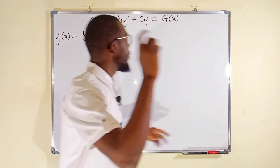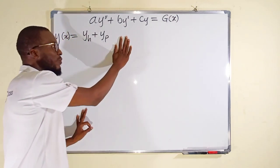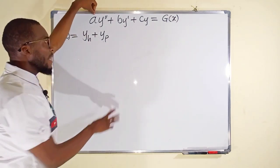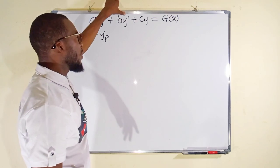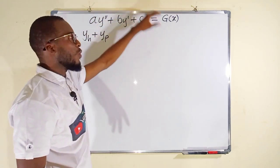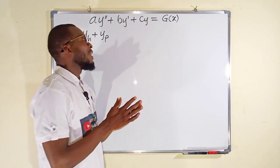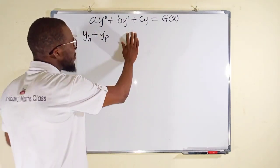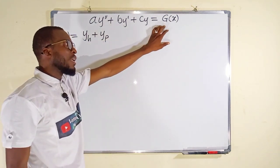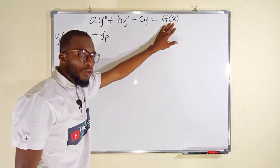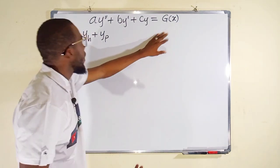We have the general form here. You can see the general form of second-order linear non-homogeneous differential equations: a y double prime plus b y prime plus cy equal to g of x, where a, b, and c are all constants. What differentiates this from the homogeneous type? In a homogeneous differential equation, g of x is equal to 0.